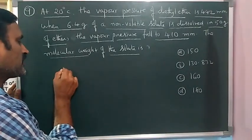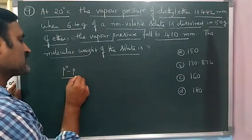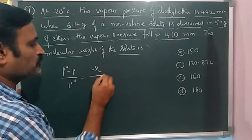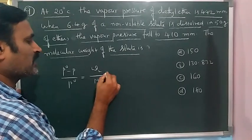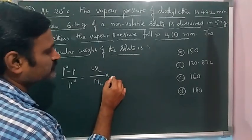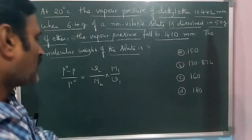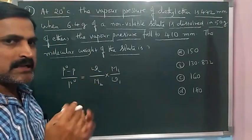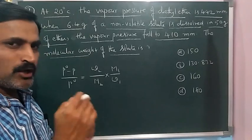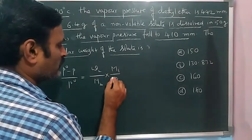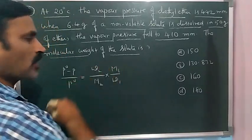That is P0 minus P by P0 equals weight of solute by molecular weight of solute into W1 by M1. Here, W2 and M2 are the values of solute, W1 and M1 are the weight and molar masses of solvent.